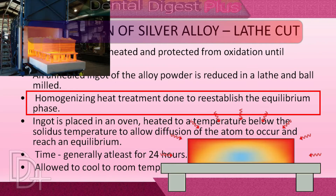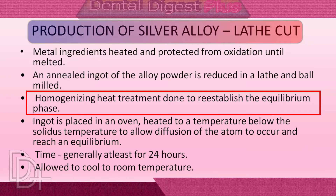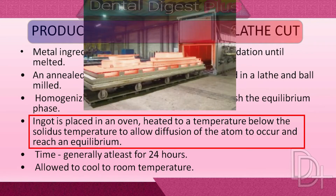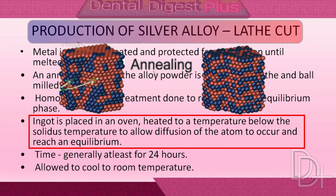After that, homogenizing heat treatment is done to re-establish the equilibrium phase. In homogenizing heat treatment, the ingot is placed in an oven and heated to a temperature below the solidus temperature, to allow diffusion of the atoms to occur and the phases to reach an equilibrium.